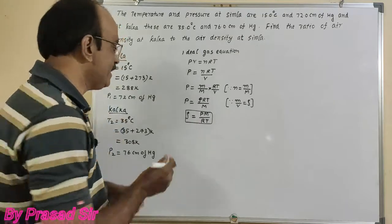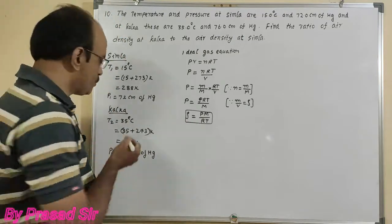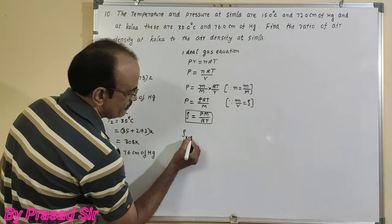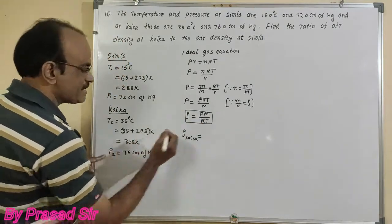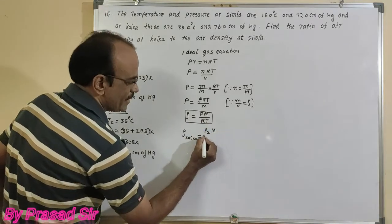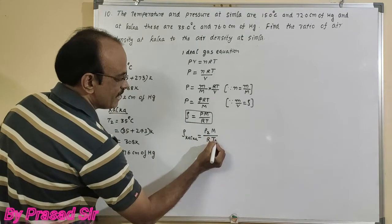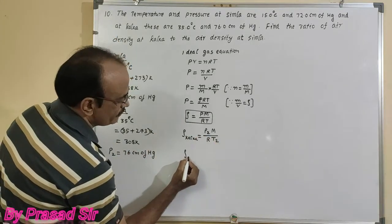I want to calculate the ratio of air densities of Calca to Simla. First, the air density of Calca is equal to pressure P2 times molecular weight M divided by gas constant R and temperature T2. Then the air density at Simla.